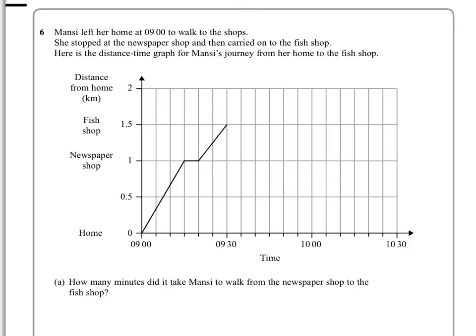In question 6, we're told that Mansi left her home at 9 o'clock to walk to the shops. She stopped at the newspaper shop, which is that bit there, and then carried on to the fish and chip shop. This is her distance-time graph.